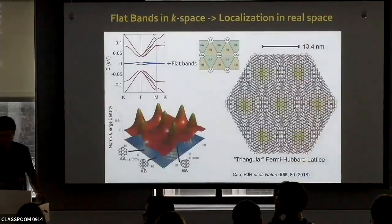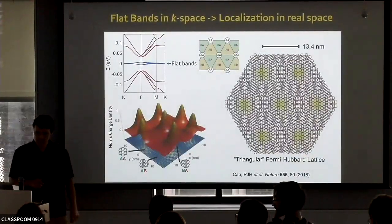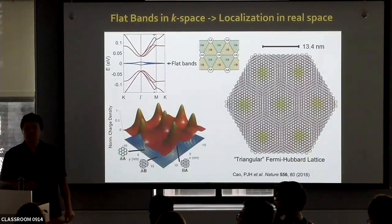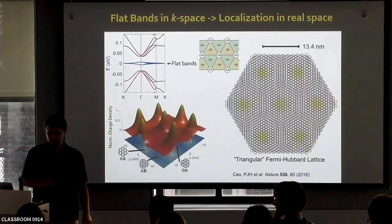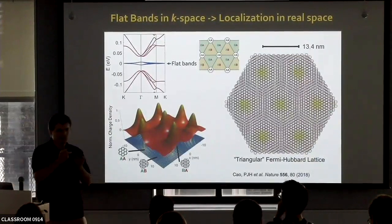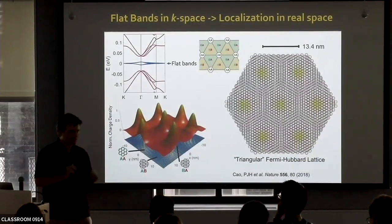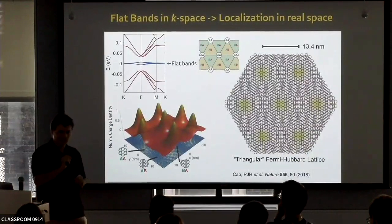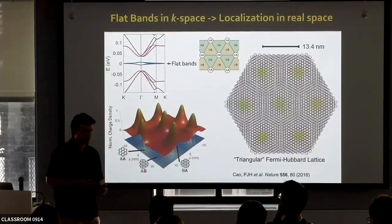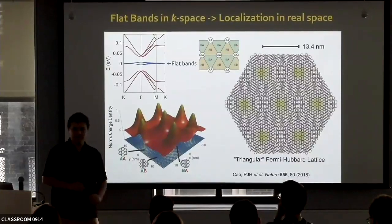A question is asked: is the flatness of the band due to some interference effect that kills the hopping — non-trivially flat? The answer is: yes, it's non-trivially flat. To this day, we do not exactly understand what the most essential key ingredient is to get these bands that flat. This is still subject of theoretical debate. People get it out of the calculations, but it's not 100% understood at a deep level why these bands are flat and so robust.